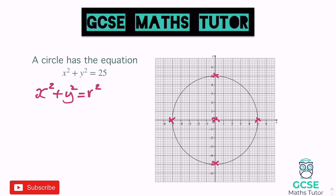If you think about the actual coordinates at these points, the coordinate at this one, for example, is 5, 0. And if we were to substitute these points into the equation of our circle, x squared plus y squared equals 25, we would get 5 squared for x plus 0 squared. 5 squared is 25, 0 squared is 0, and we get the answer 25. So you can see those points do actually work in that equation.